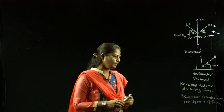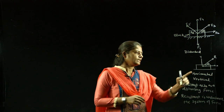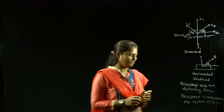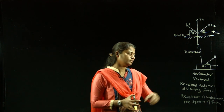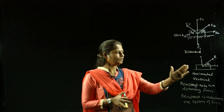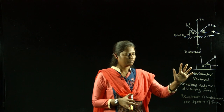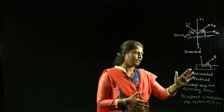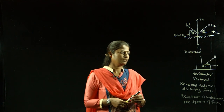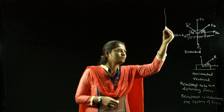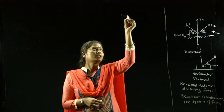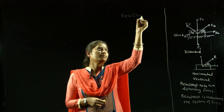Due to the unbalanced force, the block can move in a horizontal or vertical manner. If you want to remove that disturbing force and maintain the state of rest of the body, you have to apply another new force. That force is called the equilibriant force.